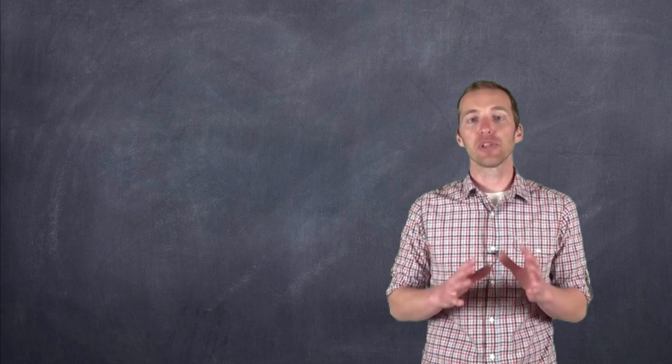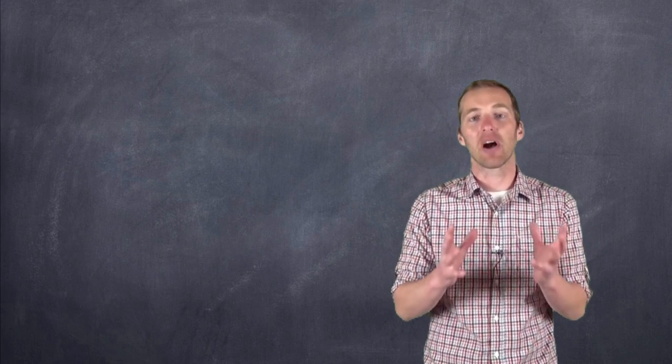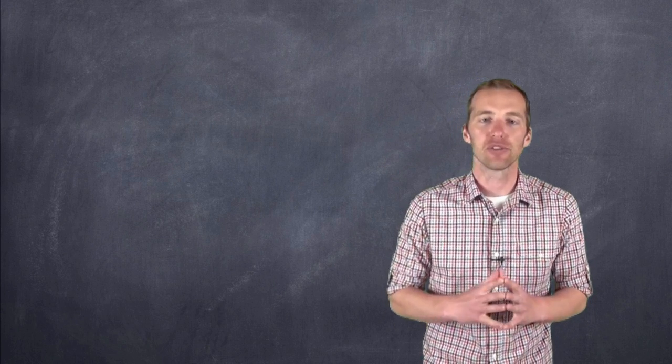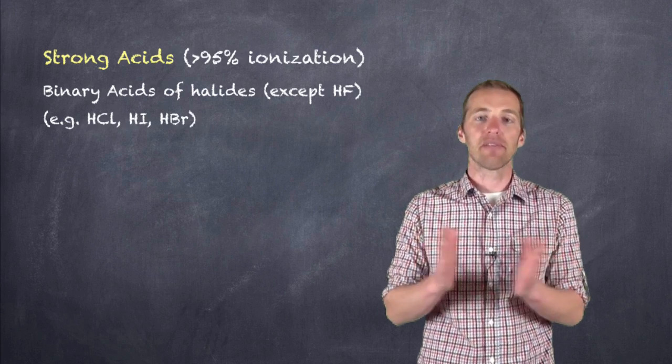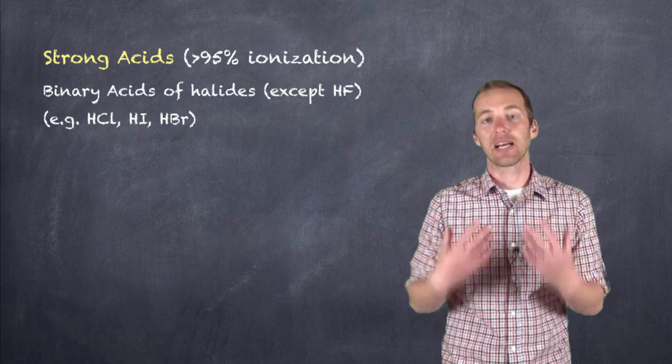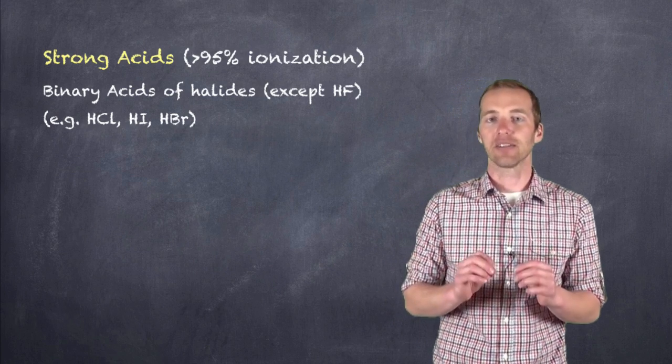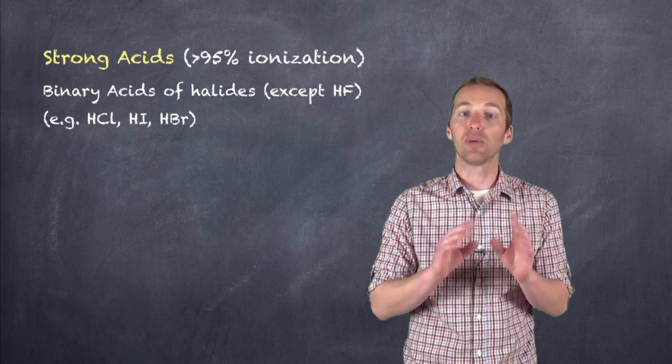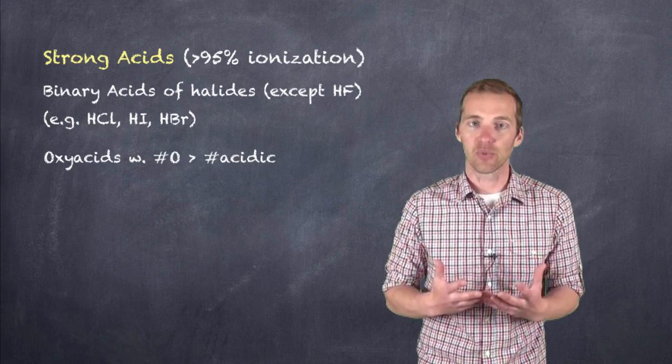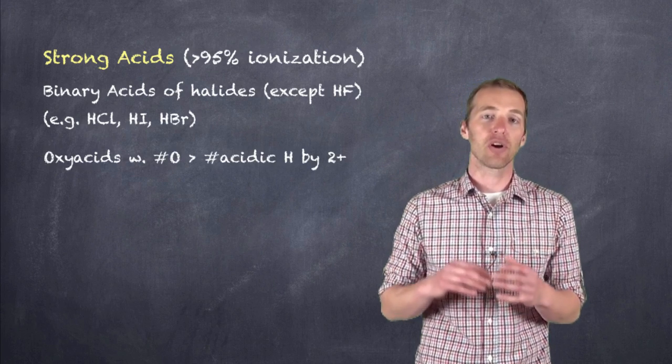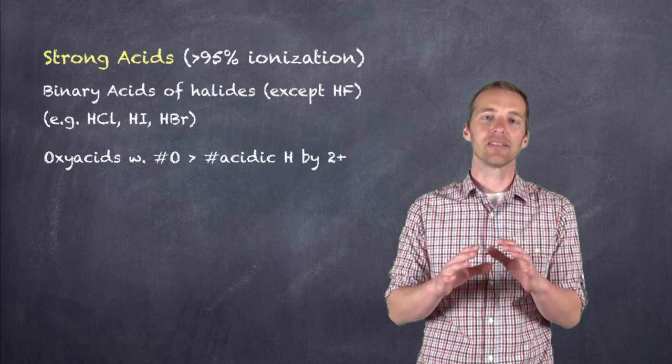Strong acids, remember, those are the ones that ionize greater than 95%. More than 95 out of 100 acidic molecules are gonna form hydrogen ions in solution. We typically say that all of the binary acids of the group 7 or the halogens are going to be classified as strong acids, with the exception of hydrofluoric acid. So hydrofluoric acid is the only weak acid in that column. We say that all oxy acids, where the number of oxygen are greater than the acidic hydrogen by 2 or more, are classified as strong acids.